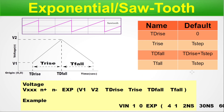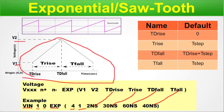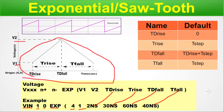Example: Vin connected between node 1 and node 0, with EXP function — V1 is 4V, V2 is 1V, TD rise is 2 nanoseconds, T rise is 30 nanoseconds, TD fall is 60 nanoseconds, and T fall is 40 nanoseconds. You can see all these values in the figure, and that is how you construct an exponential sawtooth wave using this syntax.